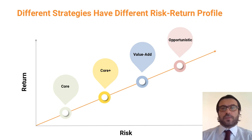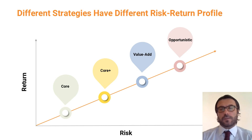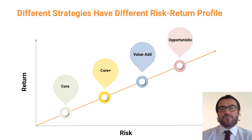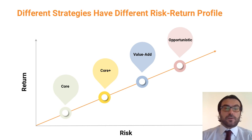Another form of opportunistic strategy is to buy a property or land where there is already planning permission, build the property, and then identify the tenant. Leverage also plays an important factor in determining the risk of investing in real estate.